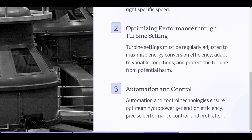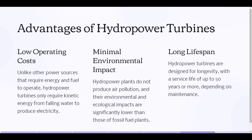Automation and control technologies ensure optimum hydropower generation efficiency, precise performance control, and protection. Advantages of hydropower turbines: Unlike other power sources that require energy and fuel to operate, hydropower turbines only require kinetic energy from falling water to produce electricity. Hydropower plants do not produce air pollution, and their environmental and ecological impacts are significantly lower than those of fossil fuel plants. Hydropower turbines are designed for longevity, with a service life of up to 50 years or more, depending on maintenance.